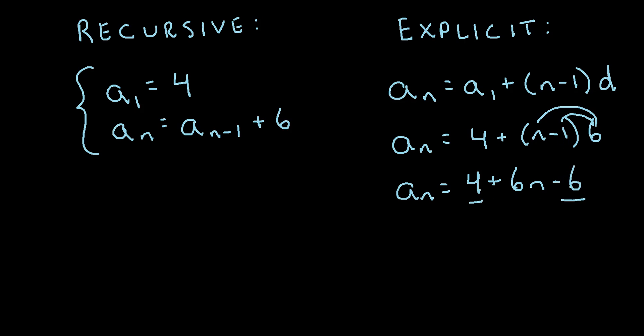We could combine this 4 and this negative 6. So we could say aₙ equals 6n, 4 minus 6 is negative 2. So aₙ equals 6n minus 2.